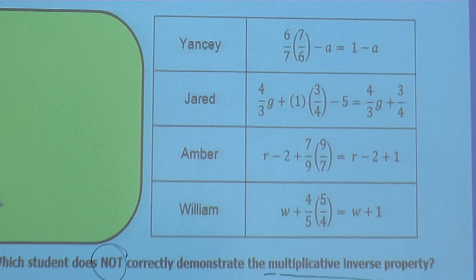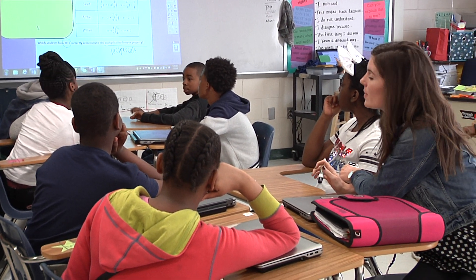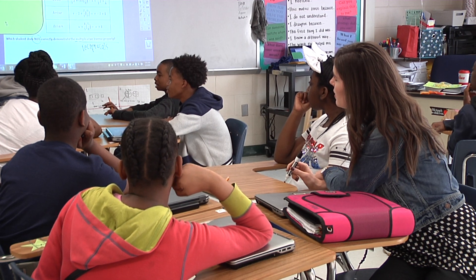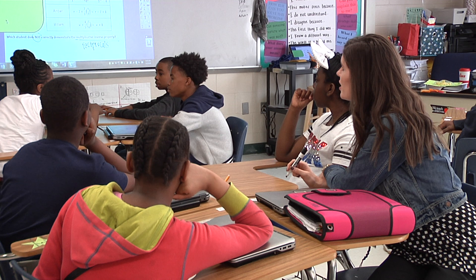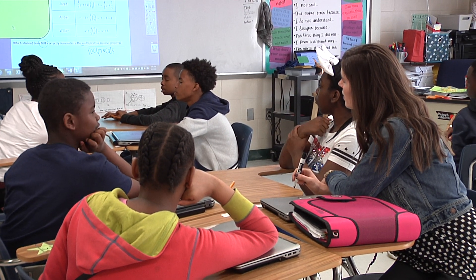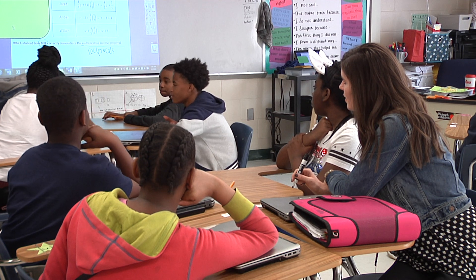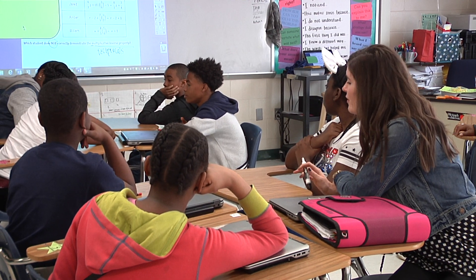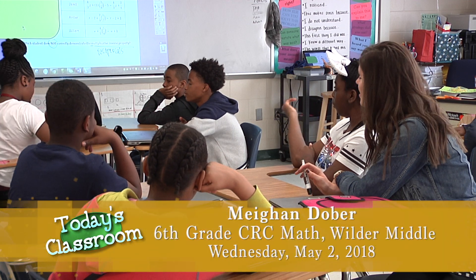David, what do you guys think over here? You think it's Amber? In Amber, you don't see any reciprocals there? Remember, we're looking for the answer that's not showing this property. So let's start at the top — Yancey. Do you see that they multiplied any reciprocals? And did that equal one on the right side of the equal sign? So Yancey shows it. What about Jared? David, you tell me about Jared. Do you see any reciprocals being multiplied? Are they being multiplied together? What operation are they separated by? Addition. And addition is not in our multiplicative inverse. So is it a safe bet to say that Jared did not show that property correctly? On the right side, it never equals one.